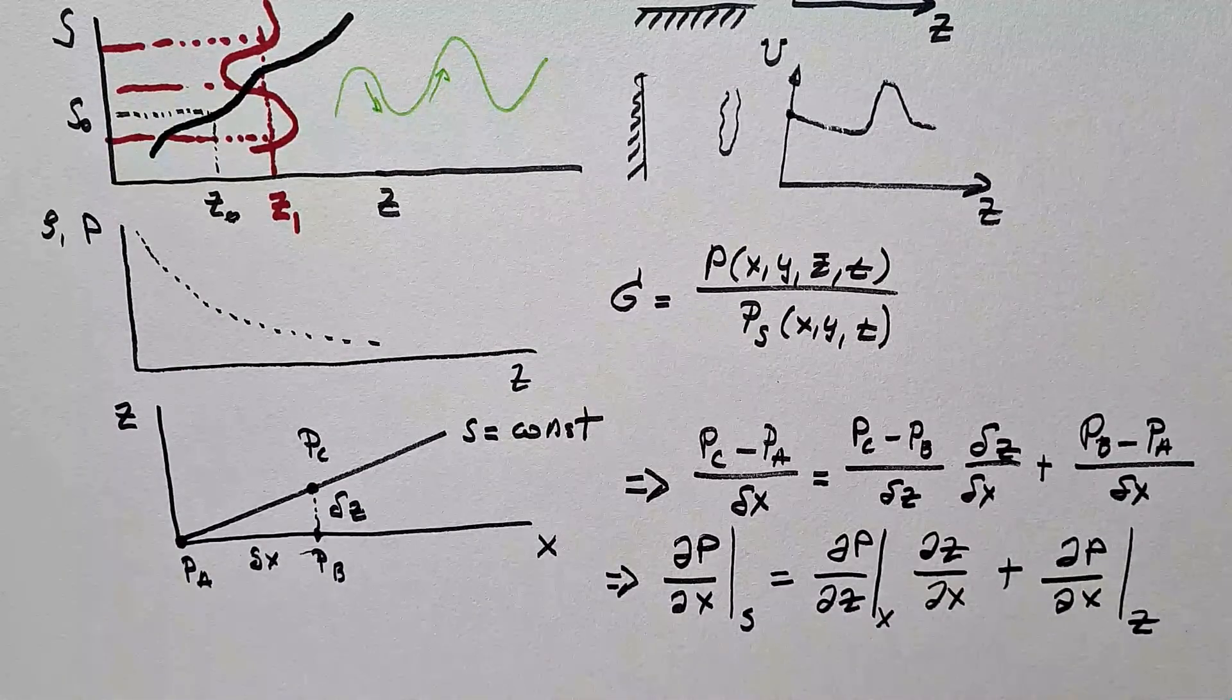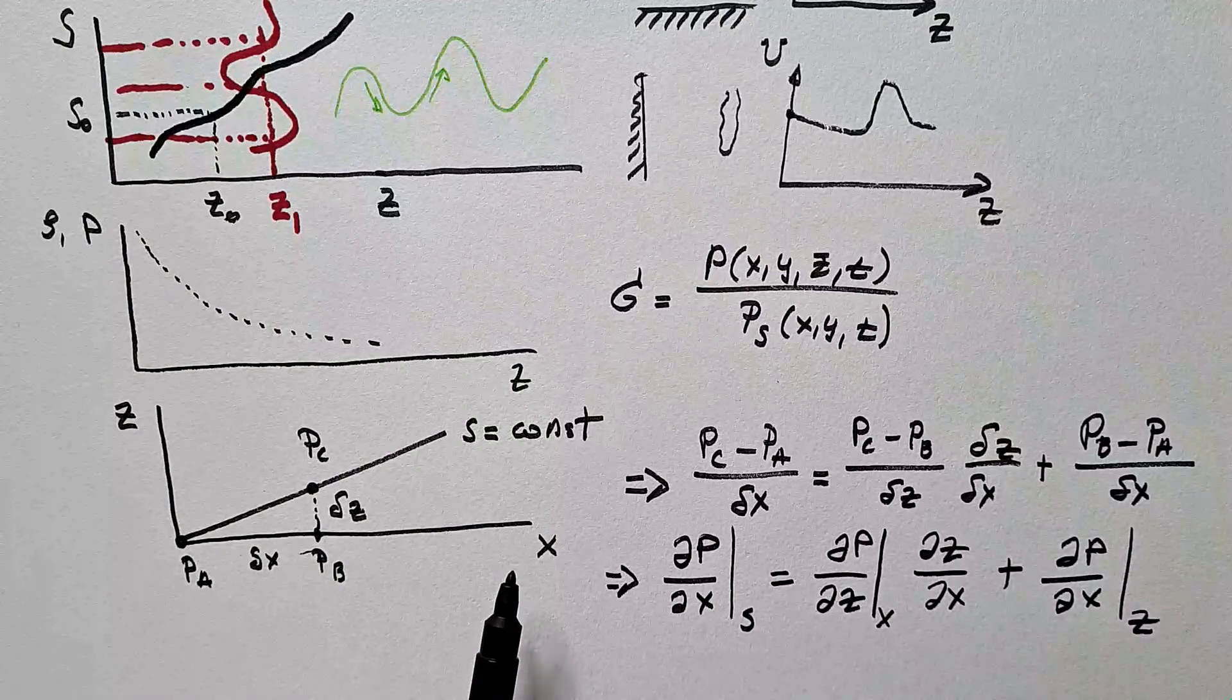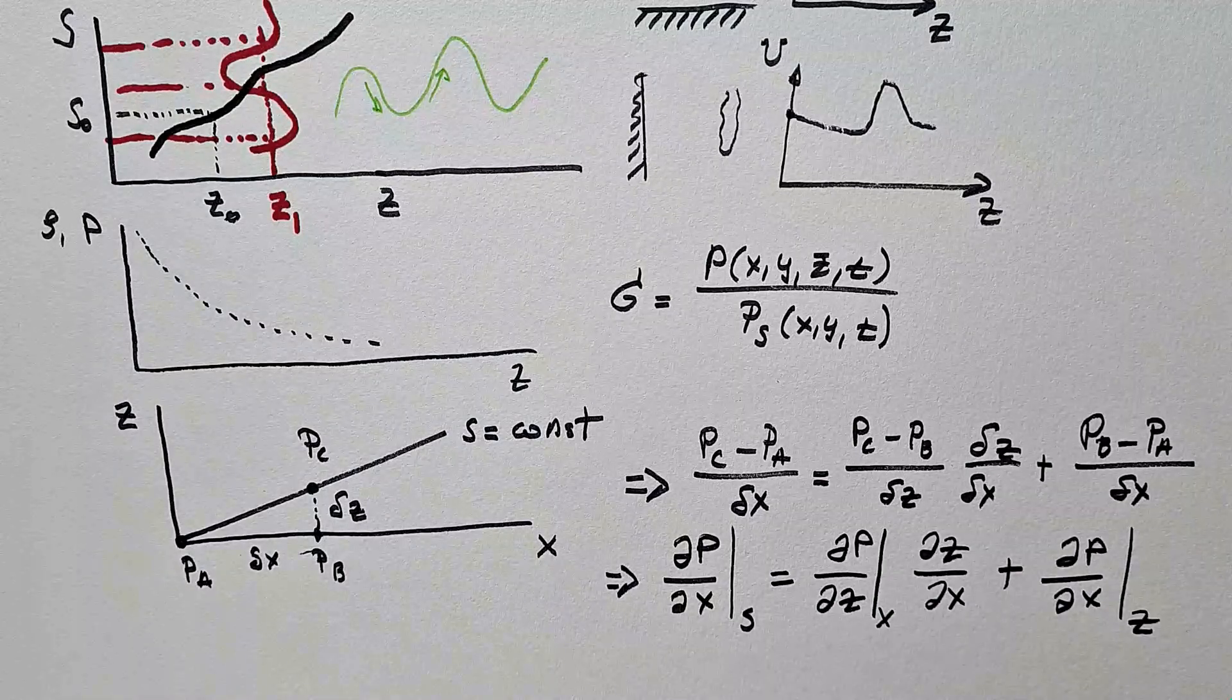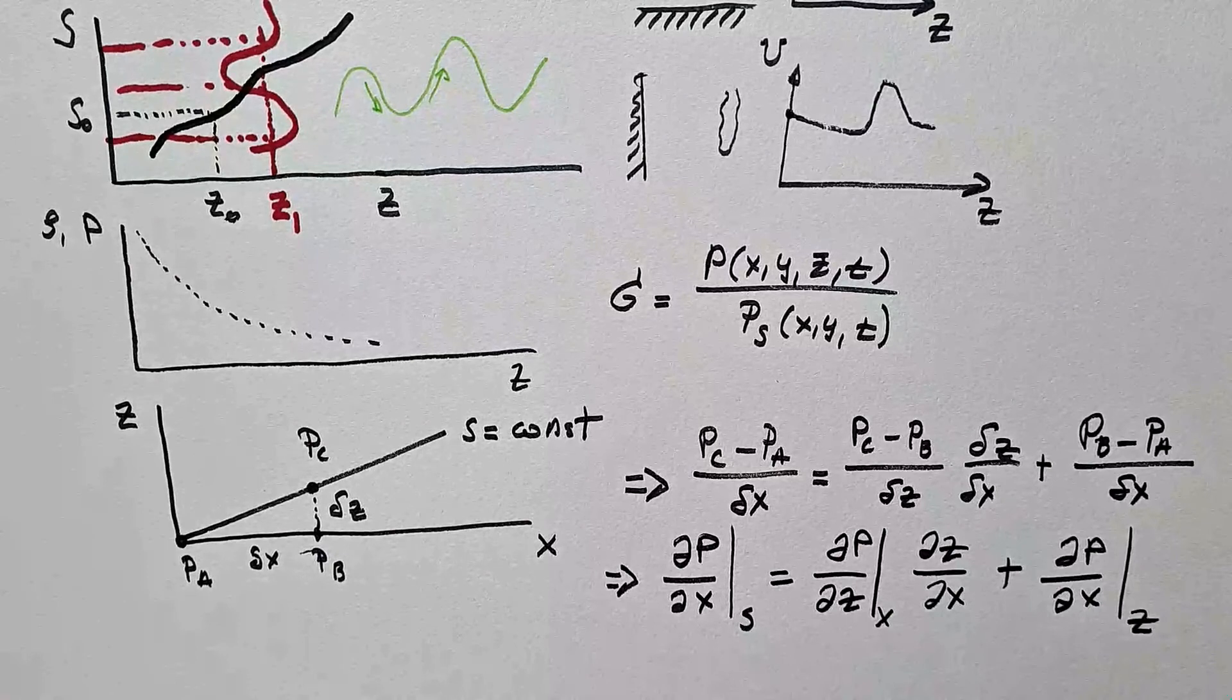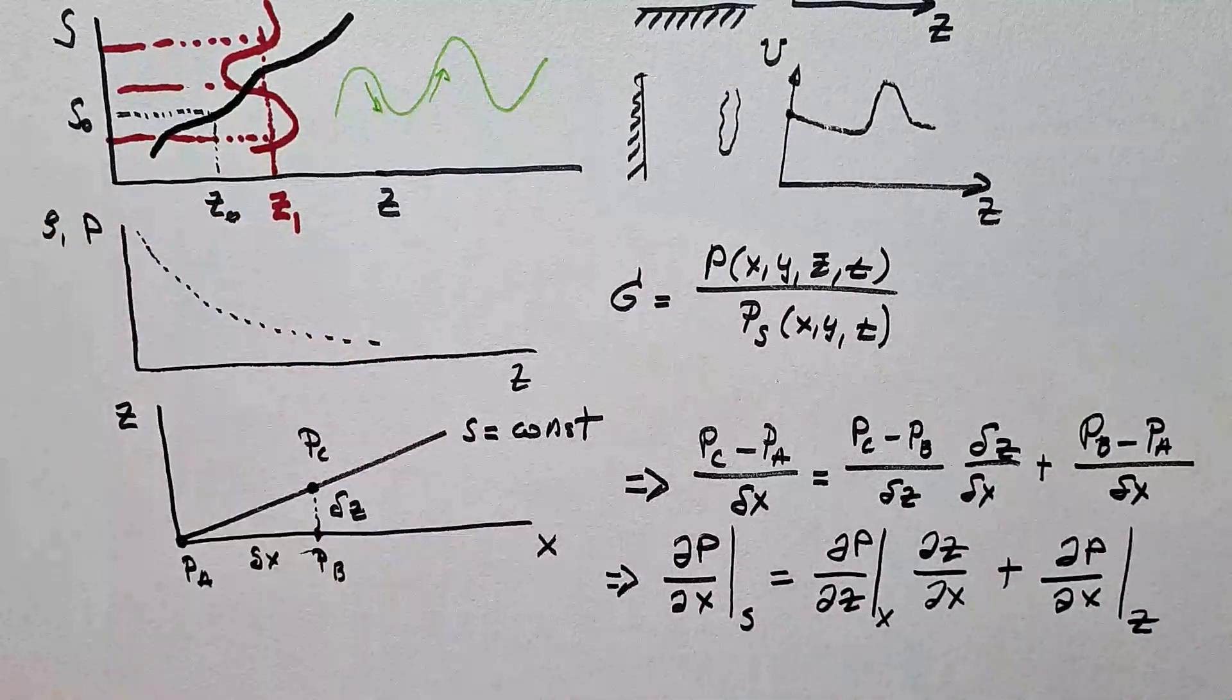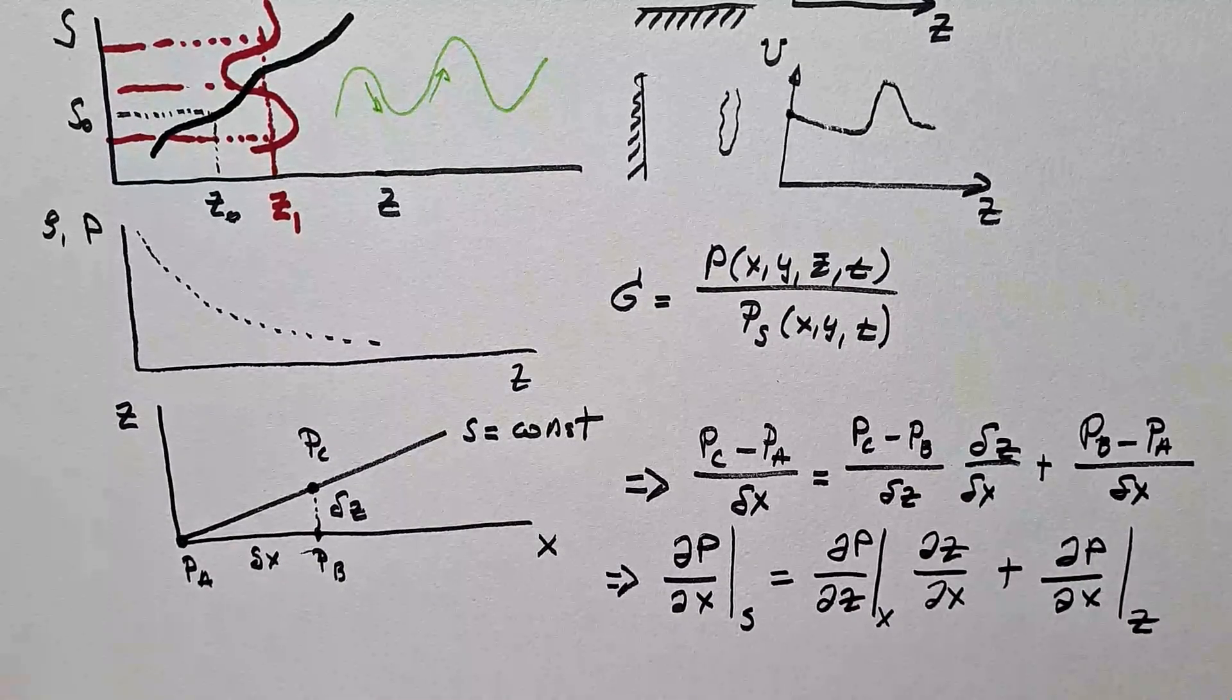So we have contribution along constant x, and we have contribution along constant z to this gradient term. The same, of course, holds if we replace x by y, the second direction in the horizontal plane. And this over here is generalization of the pressure gradient term if we use a variable s as the vertical coordinate and therefore independent variable.